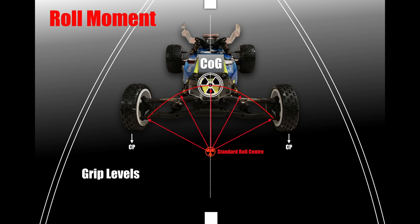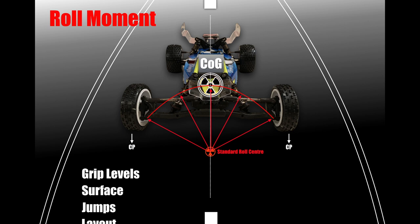One of the reasons to change your roll centre is the levels of grip. Another reason would be the surface — how bumpy it is. Thirdly, the jumps, although if you're running 12 scale, that doesn't necessarily have an impact. And the layout — whether it's a tight and twisty track. If it's tight and twisty and you want the car to react quicker, you'll see in a minute how a high roll centre will help you achieve that agility in the car.